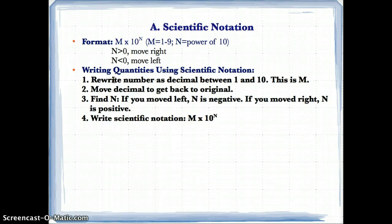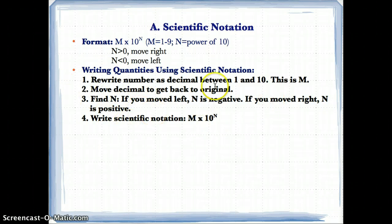Here's how to write quantities in scientific notation. Step 1: rewrite the number as a decimal between 1 and 10 — this is capital M. Step 2: move the decimal to get back to the original number, going left or right depending on the original. Step 3: find n — if you moved left, n is negative; if you moved right, n is positive. Step 4: write the result as M times 10 to the n.